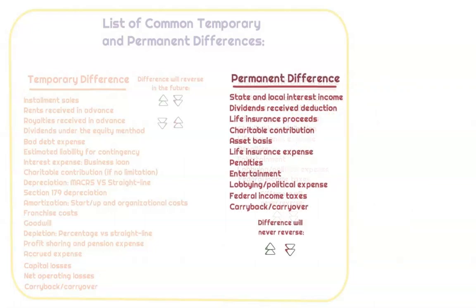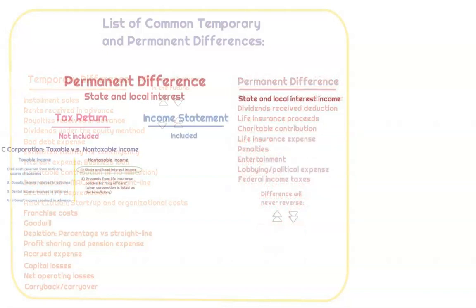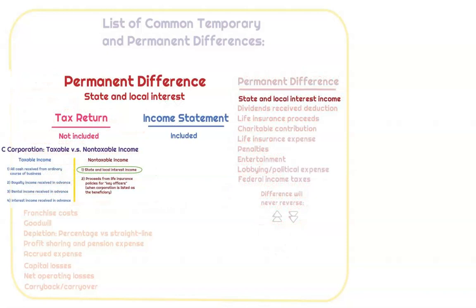Thinking about permanent differences — this is a difference between the tax return and the financial statements that will never reverse. A great example is state and local interest income, which is interest income from state and local municipal bonds. This is never going to be included as interest income for tax purposes. It's still going to be included in the financial statements as income, but because we're never going to recognize it on the tax return, that makes it a permanent difference.